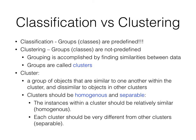In classification, the groups or classes are predefined — there's a class value or target attribute. In clustering, they're not predefined and there may not even be a class. We're just trying to group data points based on their similarities. Those groups are called clusters. A cluster is a group of objects that are similar to one another inside the cluster but dissimilar to objects in other clusters. Ideally, we want clusters that are homogeneous and separable.